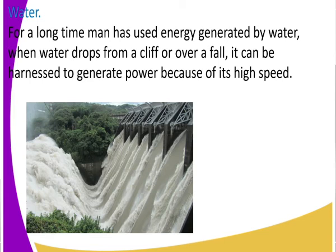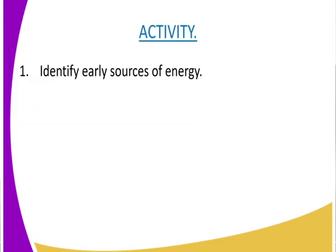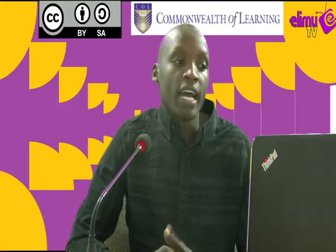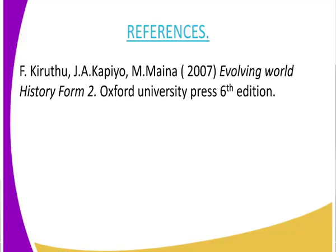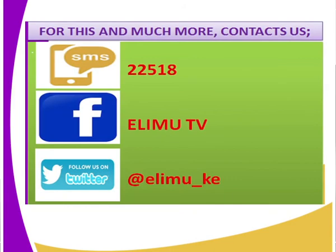So we have looked at some of the earliest sources of energy: wood, wind, and water, along with their uses. For a brain teaser, can you identify some of the early sources of energy and state their uses? For reference, refer to Evolving World History Form Two. As always, this is your favorite learning channel, Elingu TV, where you watch and learn.